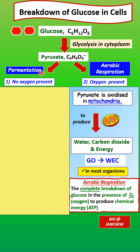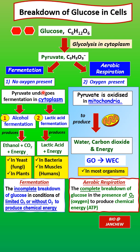The pyruvate can also undergo fermentation when there is no oxygen present or there is a limited amount of oxygen. Fermentation is a different pathway from aerobic respiration. In fermentation, the pyruvate undergoes breakdown in the cytoplasm, not in the mitochondria — so fermentation occurs in the cytoplasm.